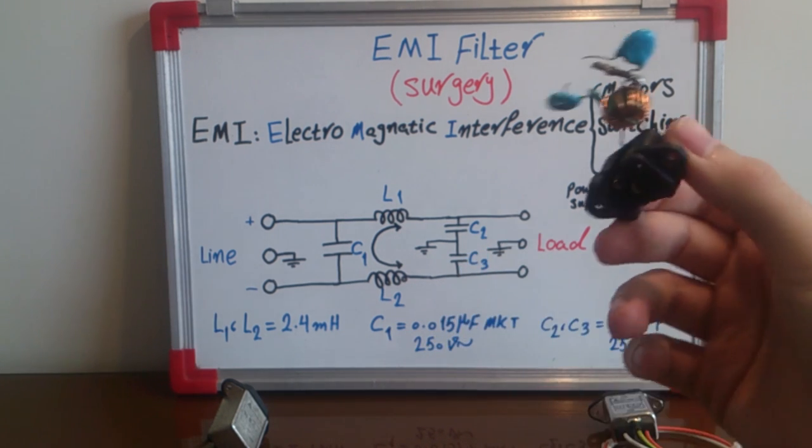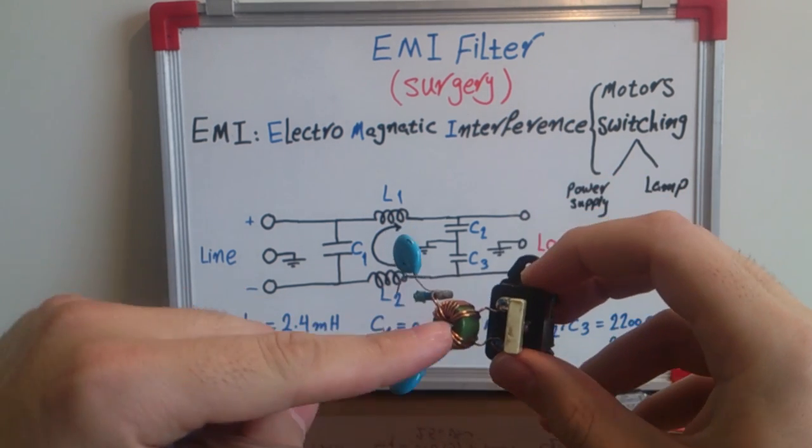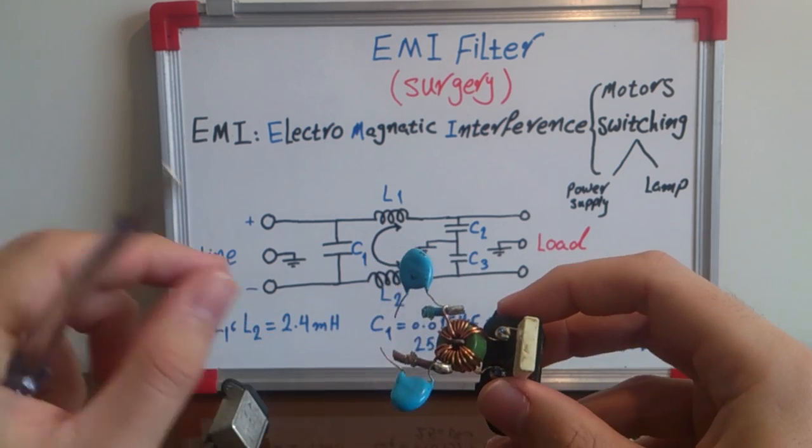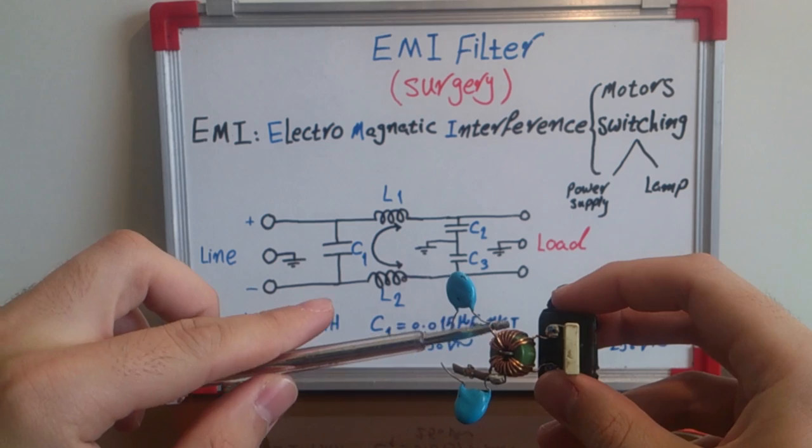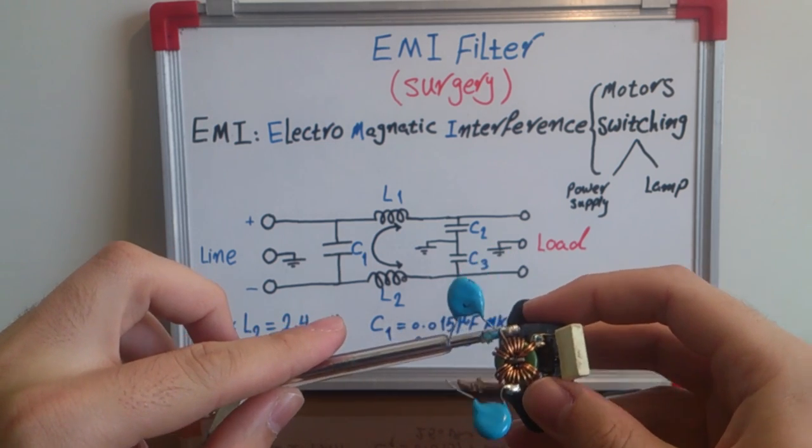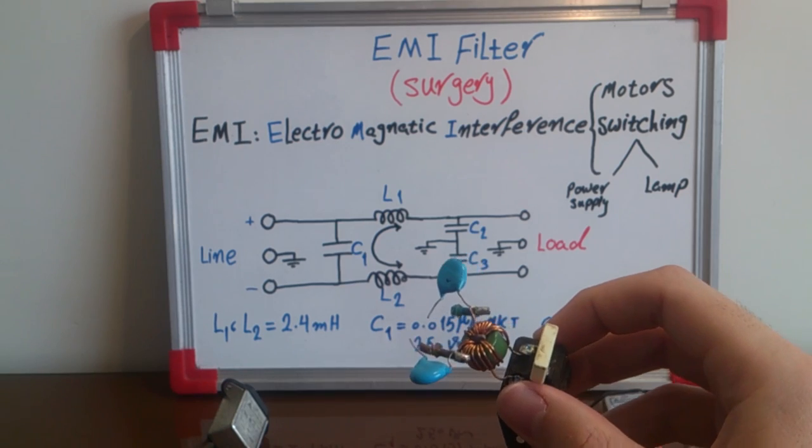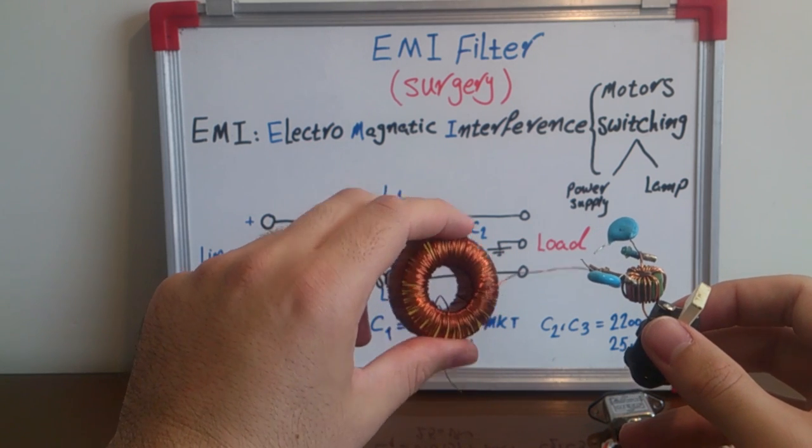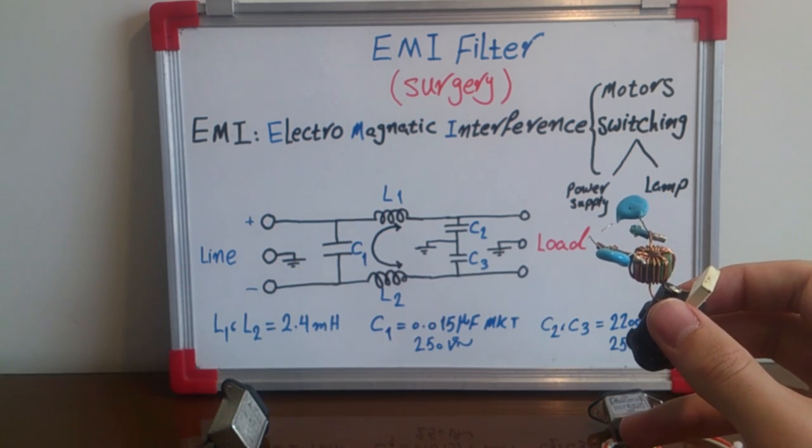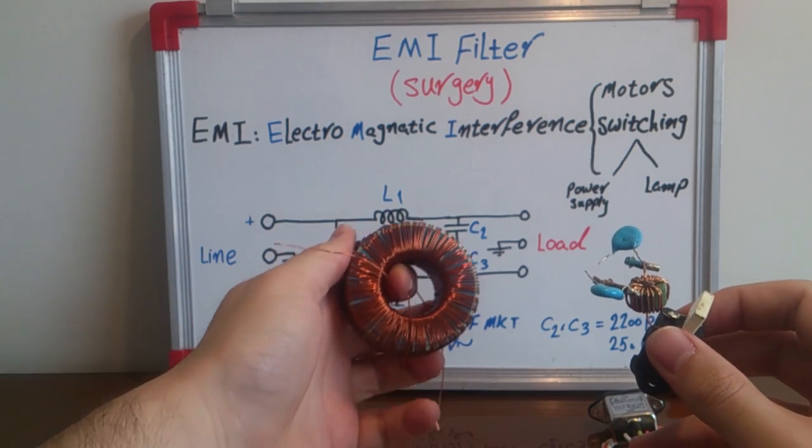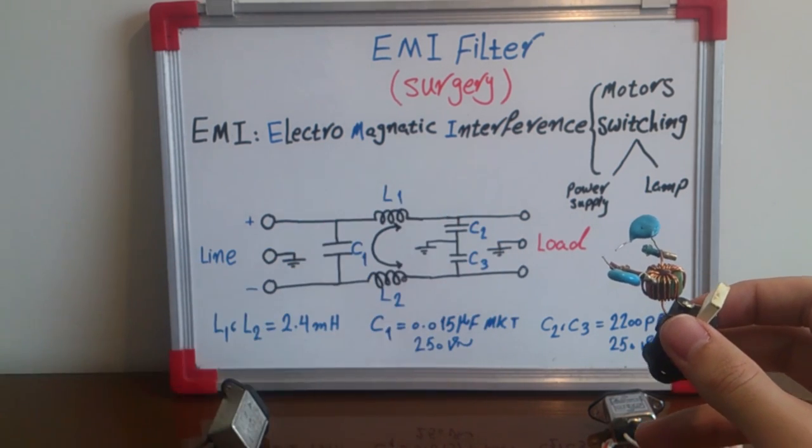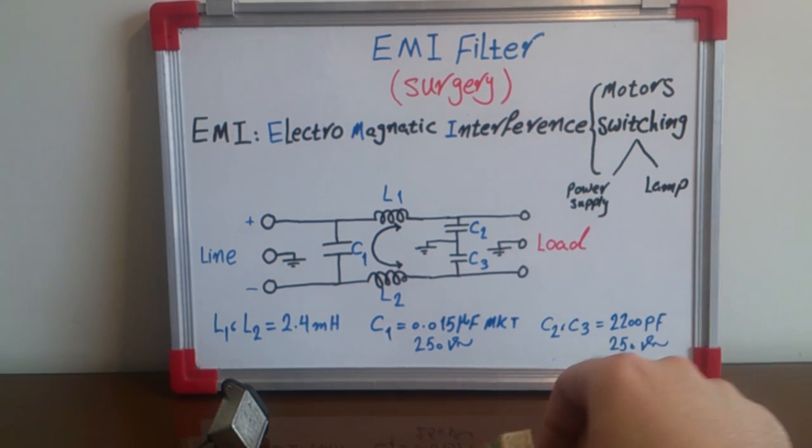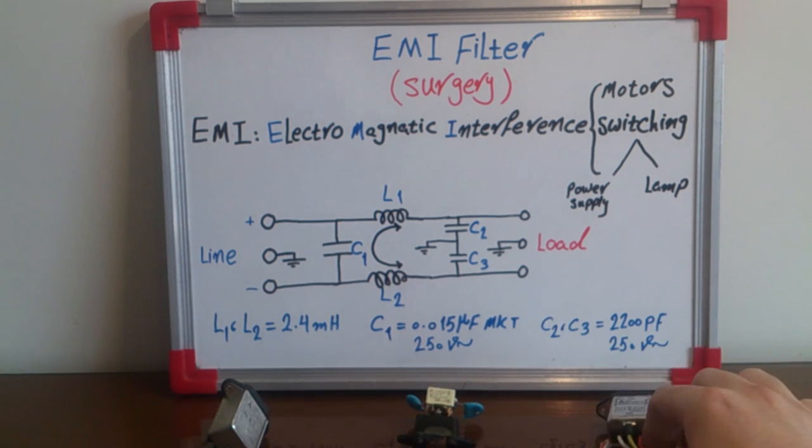I can also change the core coating and increase the permeability and use less rounds of wire around it and make maybe a bigger one, using maybe bigger cores like this one I made for myself or maybe bigger ones like this one.